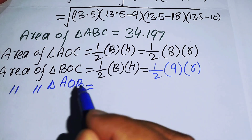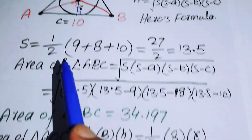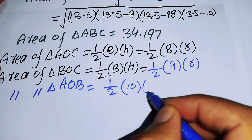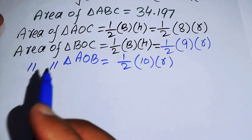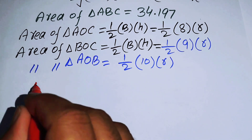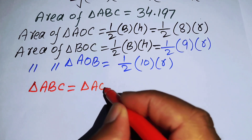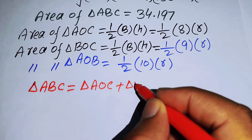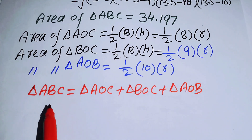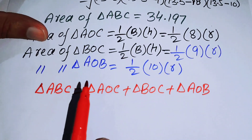The area of triangle AOB: its base is 10 and its height is r, so area of AOB = ½ × 10 × r = 5r. Now, the area of triangle ABC equals the sum: area of AOC + area of BOC + area of AOB, because the whole triangle equals the sum of these three smaller triangles.